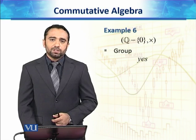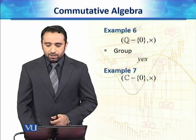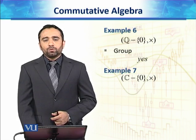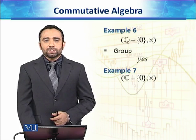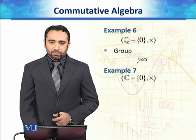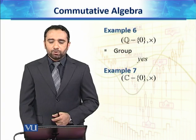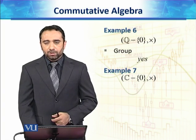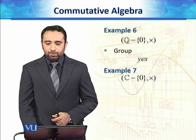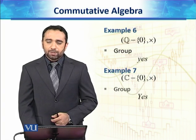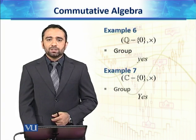If we exclude zero from Q, then it is a group under multiplication. Similarly, the set of complex numbers excluding zero is also a group under multiplication.